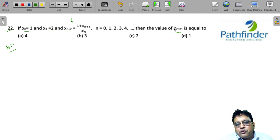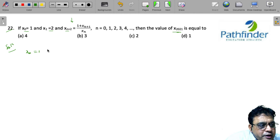Obviously, we cannot go on calculating from x₀ to x₂₀₂₁, so there has to be a pattern. This question now reduces to finding the pattern of terms. We already have x₀ as 1 and x₁ as 2.